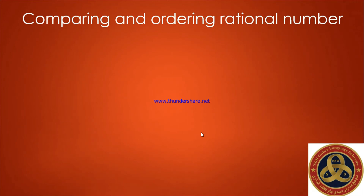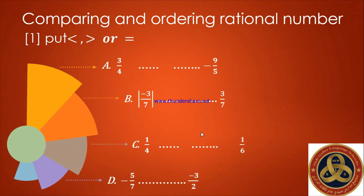Comparing and ordering rational numbers. Put less than, greater than, or equal. Letter A: I have three over four on the left and negative nine over five on the right. Any positive number is greater than any negative number, so blindly I put greater than — three over four is greater than negative nine over five.